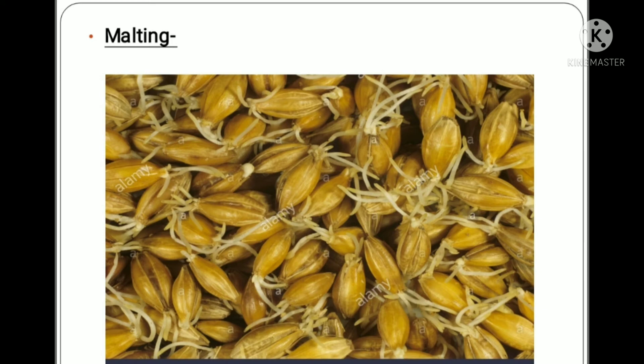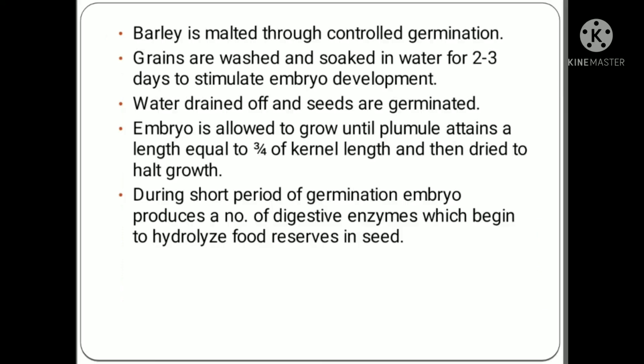The first step in beer production is malting. In the initial process, barley is malted through a controlled germination and the grains are washed and soaked for 2-3 days to stimulate the development of the embryo. The water is then drained off and the seeds are germinated. The embryo is allowed to grow until the plumule attains a length equal to approximately 3/4 of the kernel length and is then dried to halt the growth. During the short period of germination, the embryo produces a number of digestive enzymes, which begin to hydrolyze the food reserves in the seed.